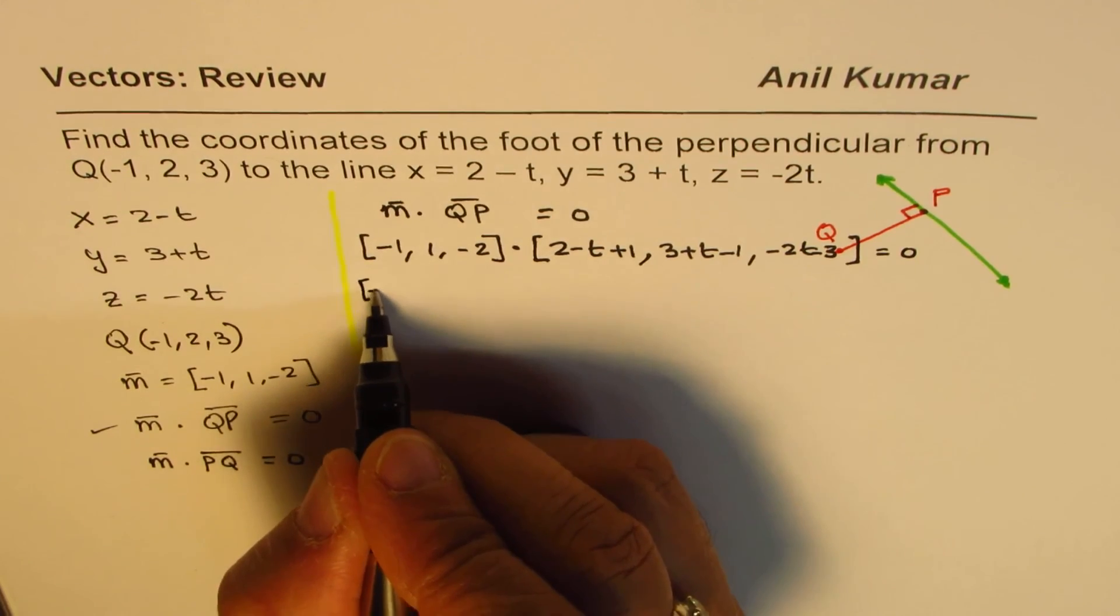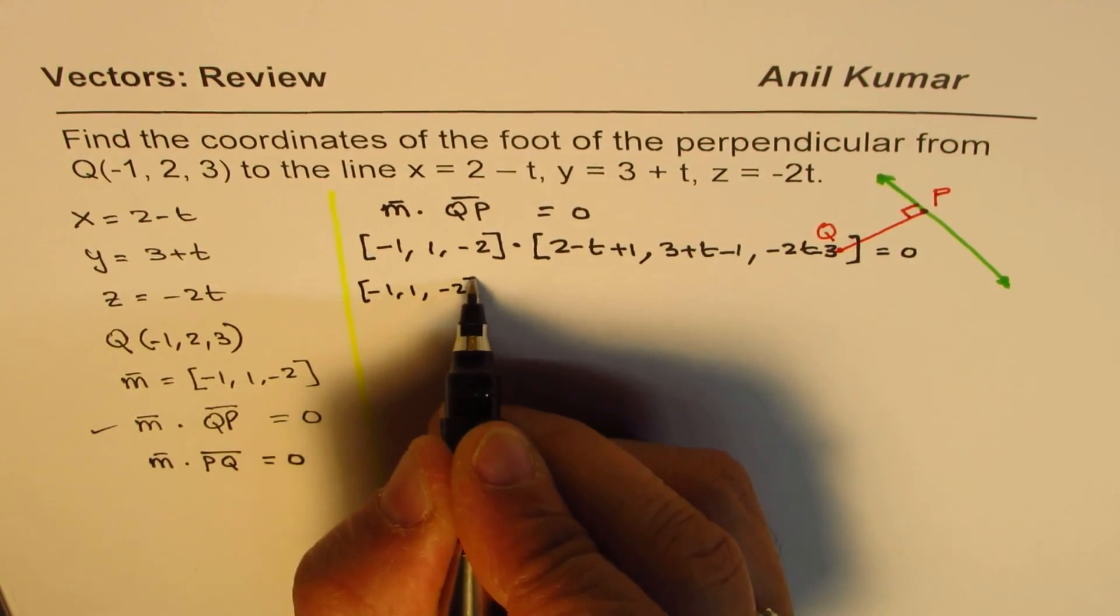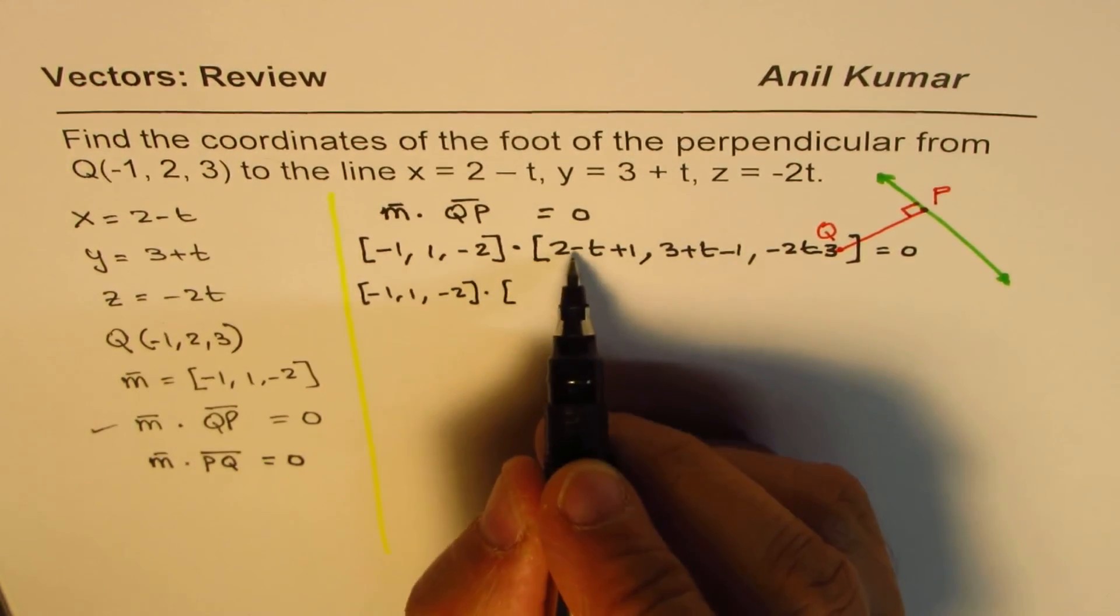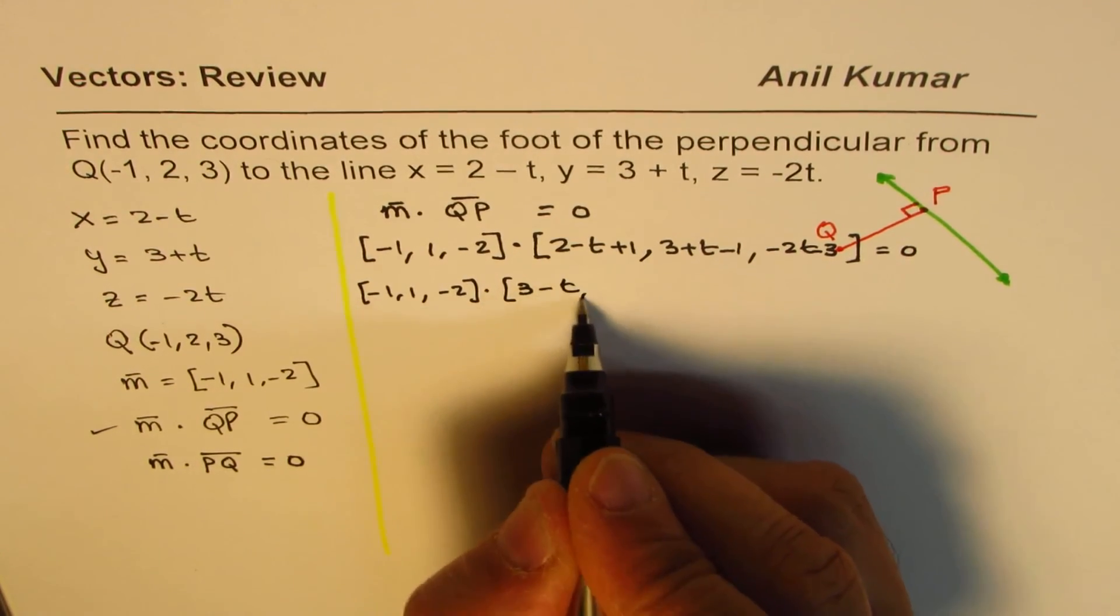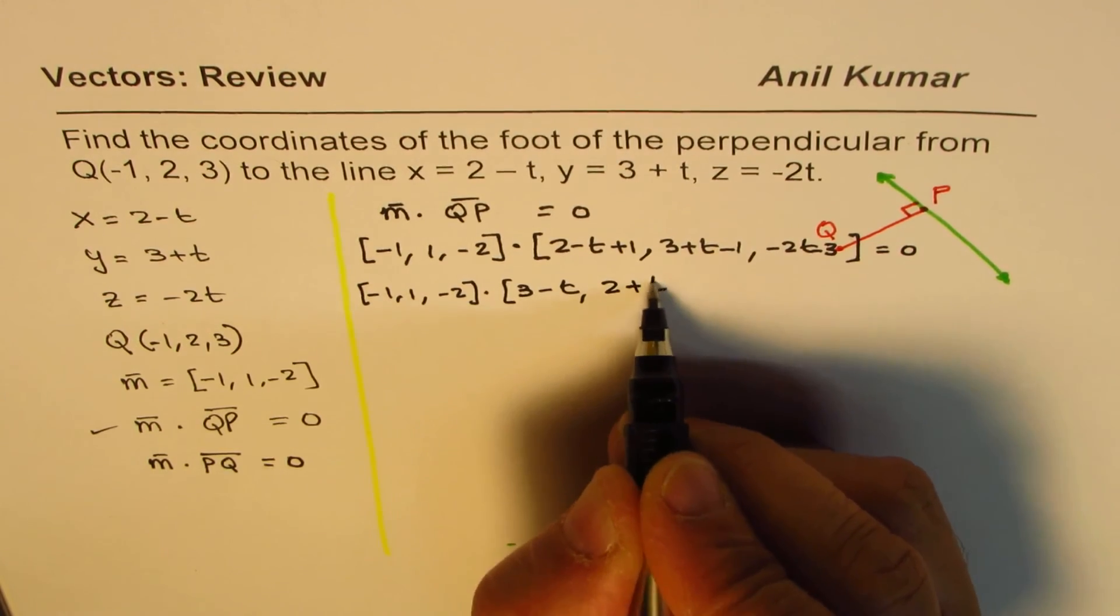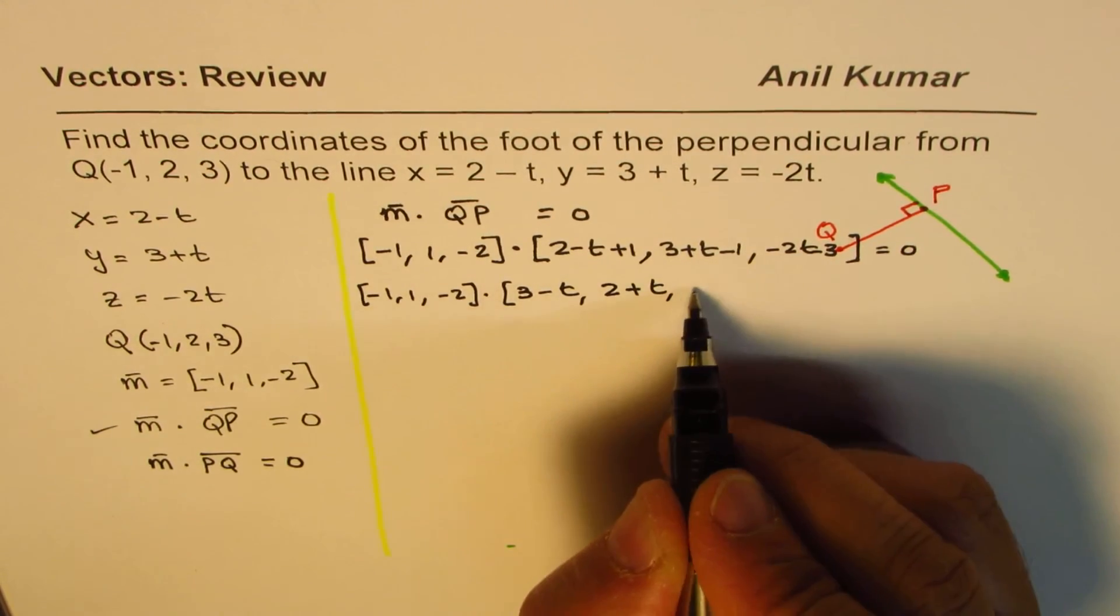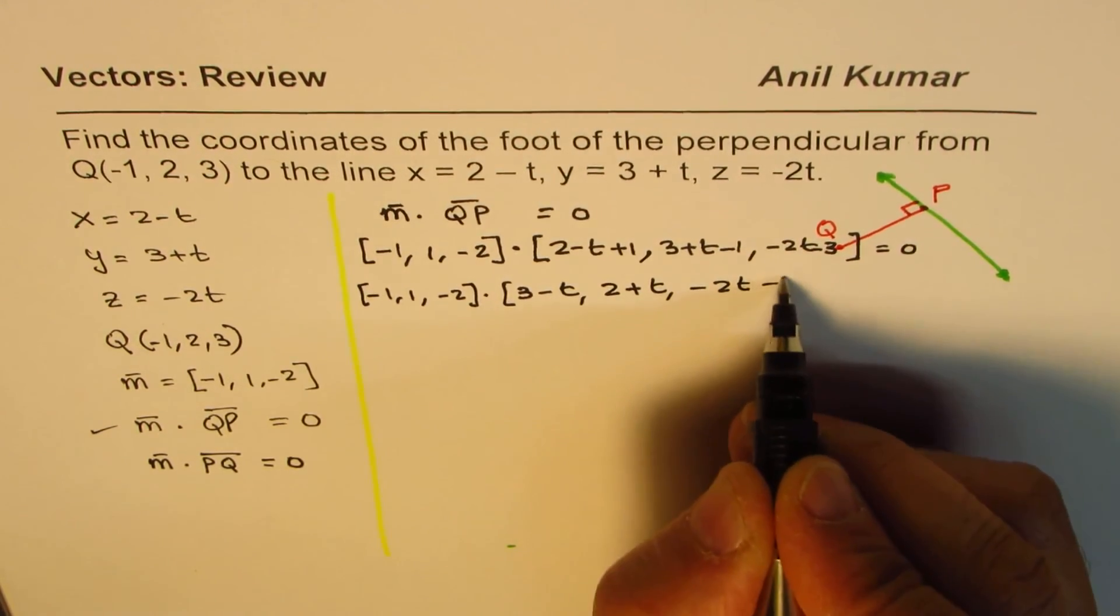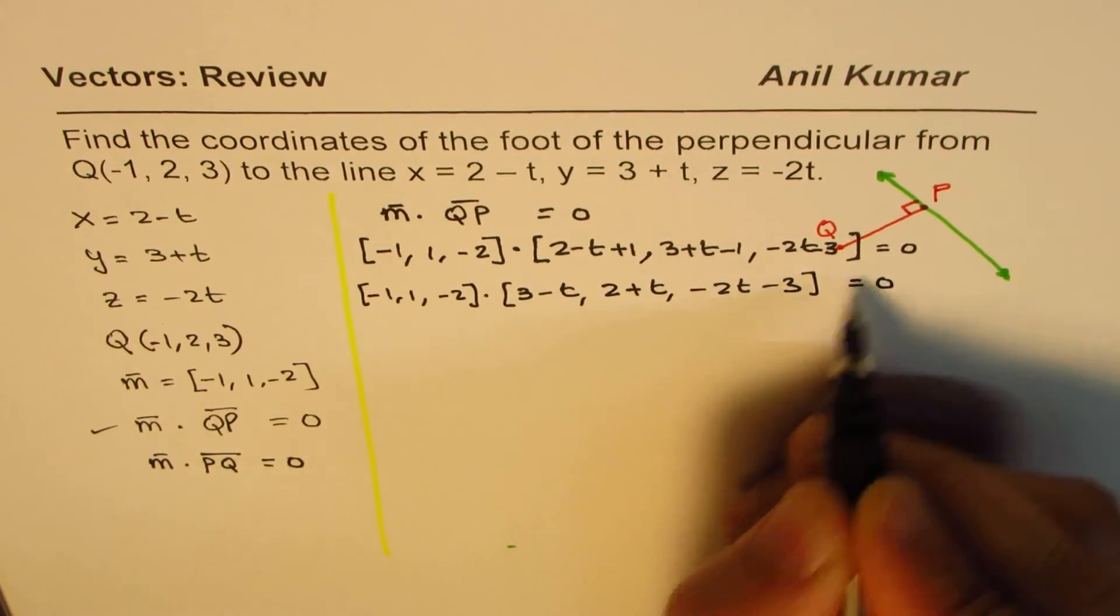So let's simplify this a bit, and that should be equal to 0. So we have (-1, 1, -2) dot. 2 plus 1 is 3, so we can write this as 3 - t. 3 minus 1 is 2, so we can write 2 + t, and -2t minus 3. This is equal to 0.